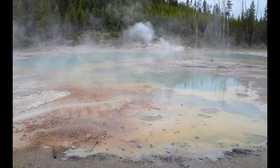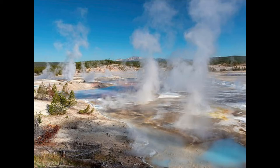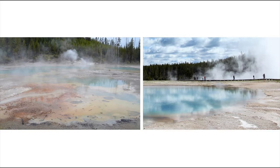Geysers and other geothermal features are signs of a slumbering supervolcano below the park. Many geysers are relatively small — they spurt and bubble all day long in pools or springs with bluish-green colors created by certain minerals. In Yellowstone you find mud pots, hot springs, pools, lakes, and it's also home to three giant waterfalls.